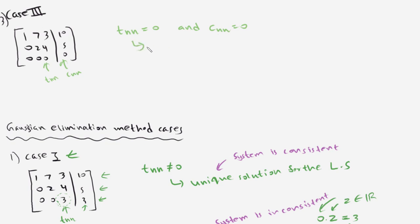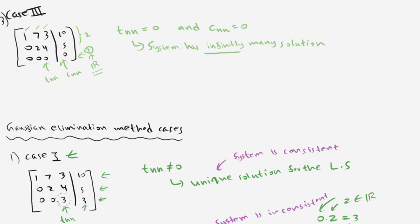When both tnn and cnn are zero, the system has infinitely many solutions. Because we lack one linear equation — with three unknowns but only two effective equations — one unknown can be any real number. Since there are infinitely many real numbers, there are infinitely many solutions. Each solution is acceptable, so the system is consistent.